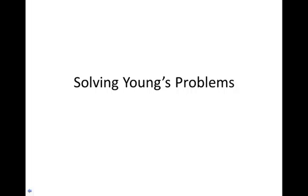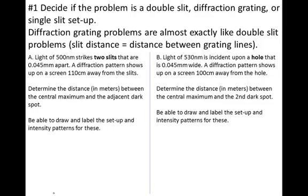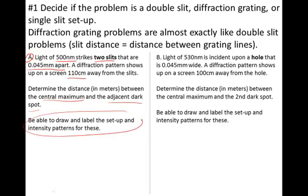This is a video about how to solve Young's single-slit and double-slit problems. Let's look at a couple examples. Example A says we've got light with a wavelength of 500 nanometers striking two slits that are 0.045 millimeters apart. The diffraction pattern shows up on a screen 110 centimeters away from the slits. We're supposed to determine the distance between the central maximum and the adjacent dark spot, and also draw and label the setup and intensity patterns.